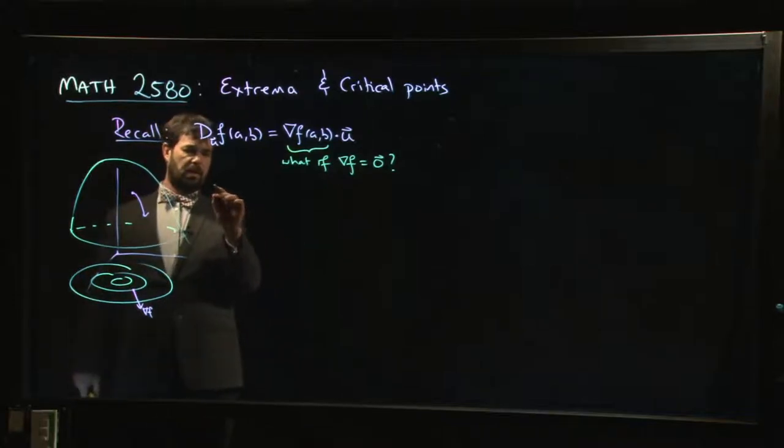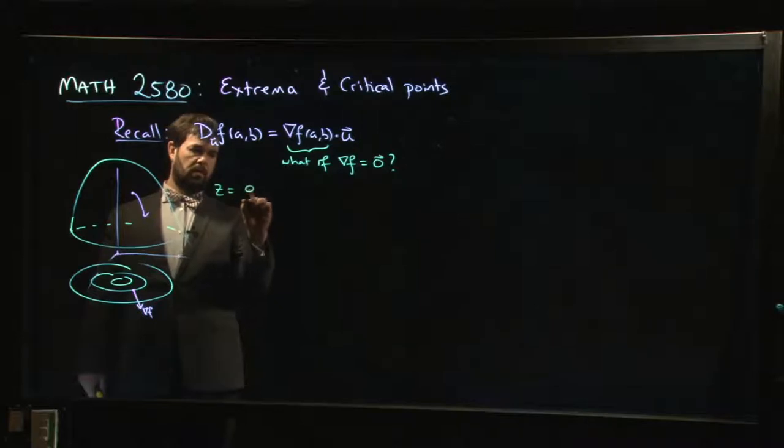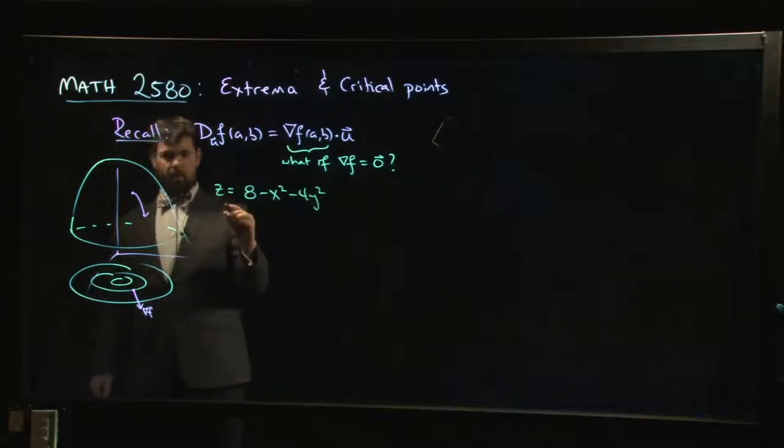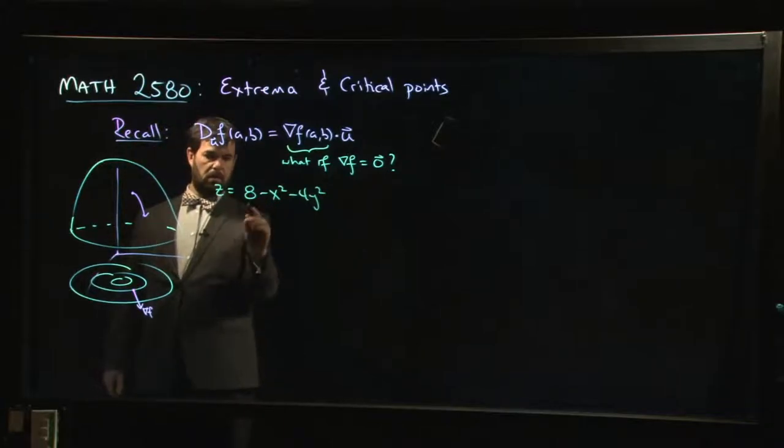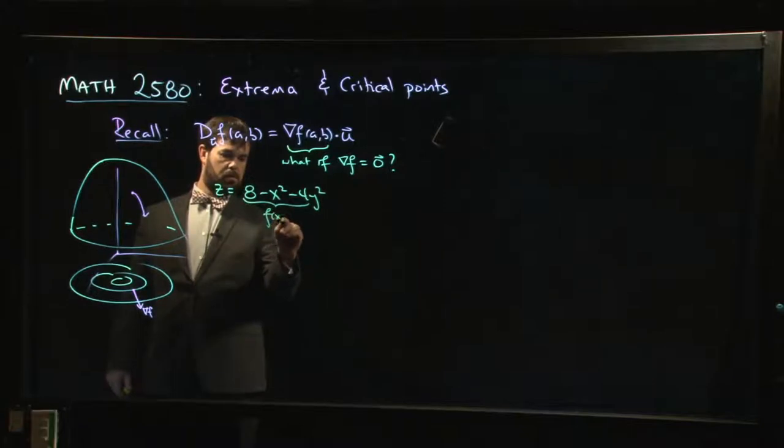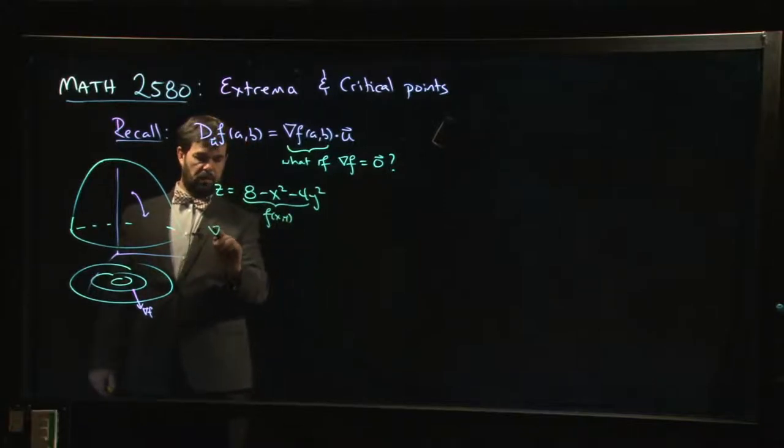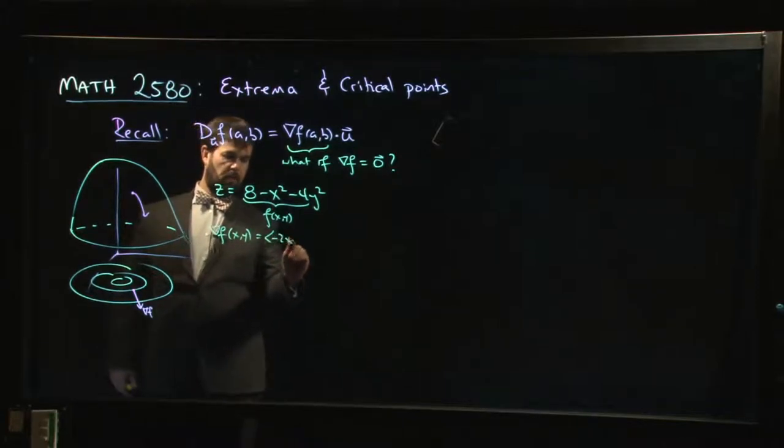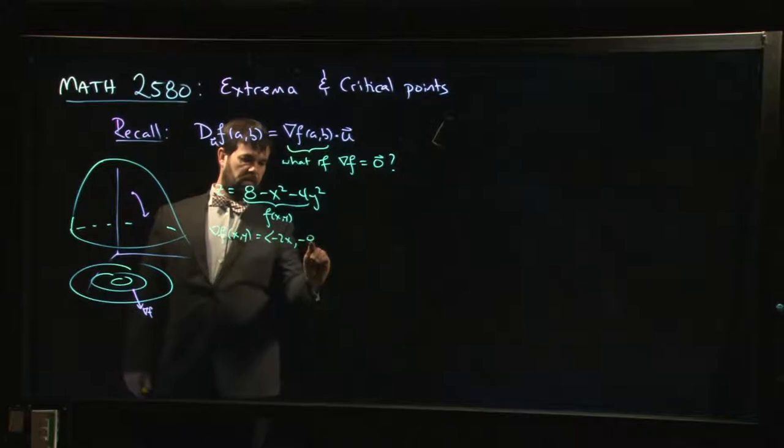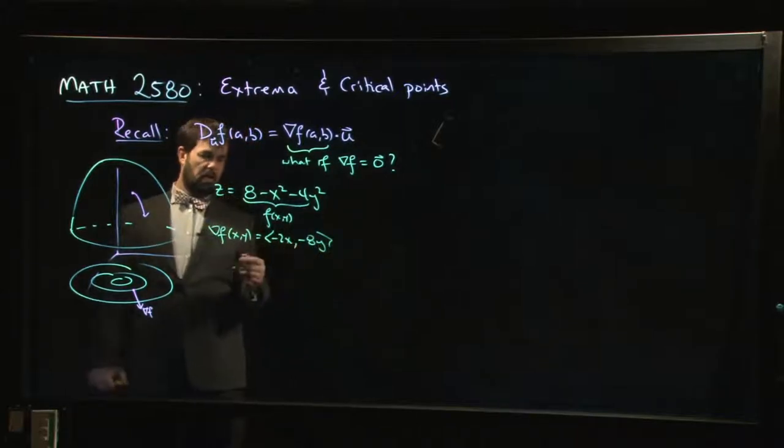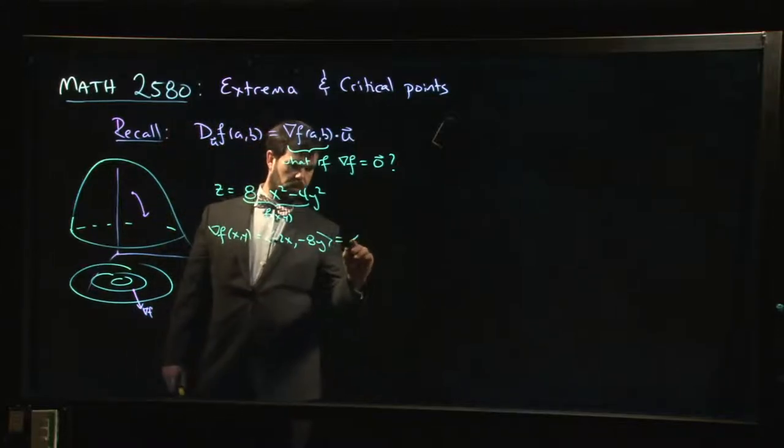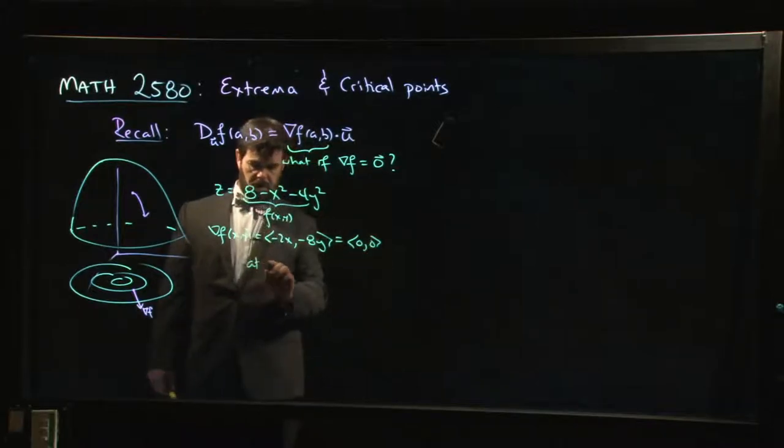This came from something like, I think we were doing something like this: 8 minus x squared minus 4y squared. So we calculate the gradient. This is our function f(x,y). What's the gradient look like? The gradient is going to look like minus 2x, minus 8y. We can see where exactly the gradient is going to be zero.